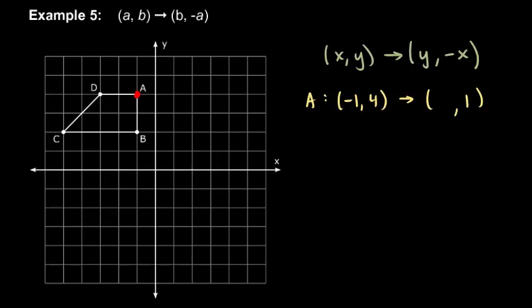And then I also see that my y-coordinate becomes the x-coordinate. So the 4 here goes right there. So point A goes from (-1, 4) to (4, 1). So this is point A primed, right over there.